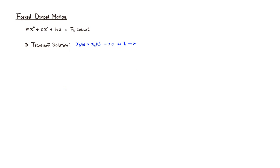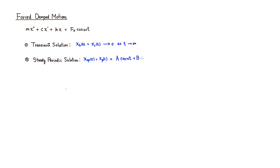The second kind of solution is the steady periodic solution. This is a particular solution, x_sp. By looking at the right-hand side, which is cosine, it's going to be a combination of cosine and sine. So the steady periodic solution has the form A·cos(ωt) + B·sin(ωt).